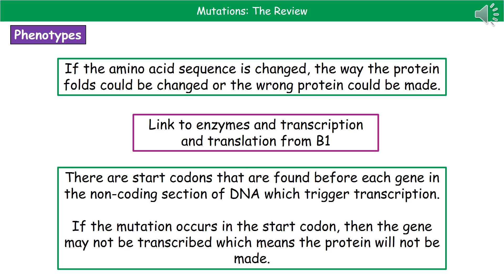Just before each gene in our DNA sequence, there is something called a start codon — a sequence of three bases that tells the whole process to start here. If we get a mutation in that start codon, it could actually prevent the entire gene from being transcribed, meaning we won't make that protein at all. It's not just changes within the gene that can cause problems; a mutation within the non-coding region may prevent the protein from being expressed at all. Recap enzymes, transcription, and translation from B1 before your B5 exam, otherwise you could come unstuck.